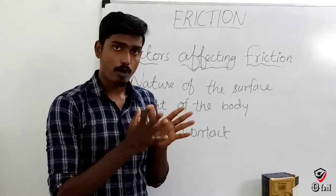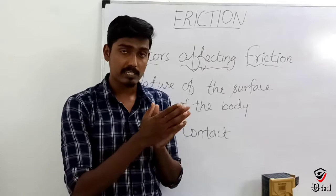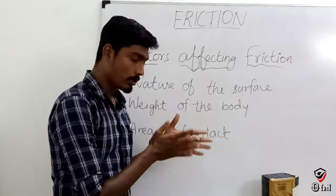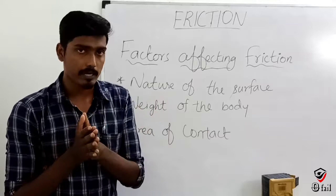When you compare the surfaces — glass versus cotton — the marble will cover a different distance on each. On the cotton surface, it will cover a shorter distance due to more friction. On the glass surface, it is smoother, so the marble covers a greater distance. This shows how the nature of the surface affects friction.